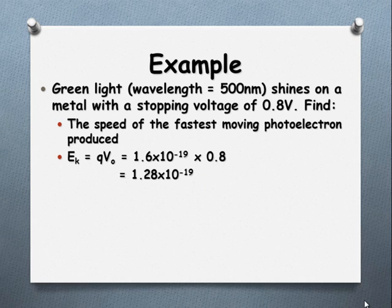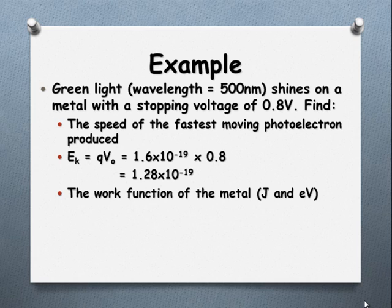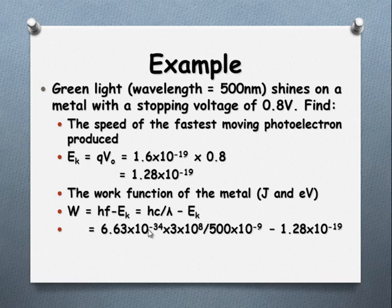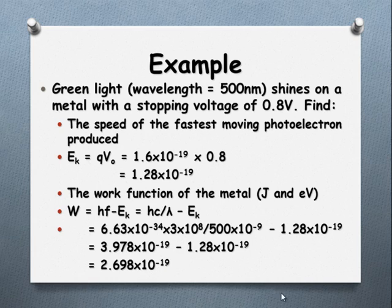Find the work function then. We know the wavelength. E equals HF, that's the same as C over lambda. Substituting in, we've got H times speed of light over the wavelength to give us our frequency, minus our kinetic energy. Do that subtraction. We've got 2.698 times 10 to the negative 19 joules as our work function.